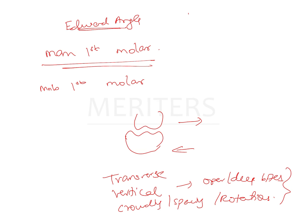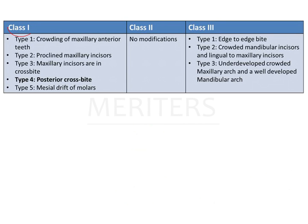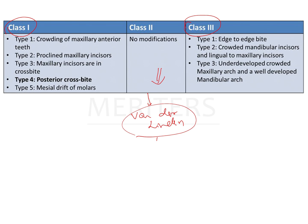To overcome some of the limitations of this classification, many modifications were given. One modification was given by Dr. Martin Dewey, who was Angle's student and later became Angle's rival. Dr. Martin Dewey gave modifications for class 1 and class 3 of Angle's classification. There are no modifications for class 2 in Dewey's modification; however, Van der Linden gave a modification for class 2 division 2. This is important and can be asked in the exam.